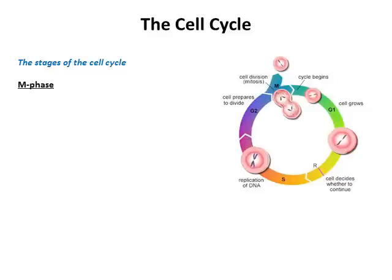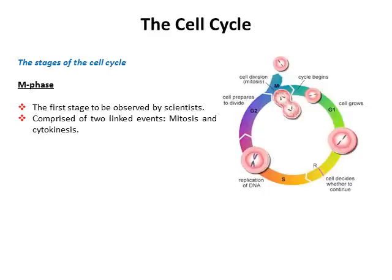Let's look at M phase — or mitosis — which was actually the first stage of the cell cycle to be observed by scientists. It's comprised of two linked events: mitosis and cytokinesis. The reason it was one of the first observed events under the microscope is that during M phase, the nuclear material undergoes a series of structural changes that make it much easier to see via the light microscope. Chromosomes condense, align on something called the metaphase plate, and then separate in a very visually striking process. We'll talk about that in more detail in the following lecture on mitosis and meiosis.